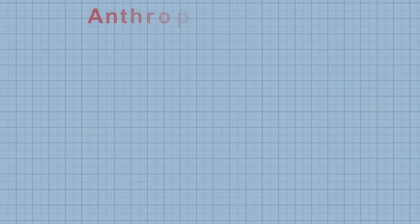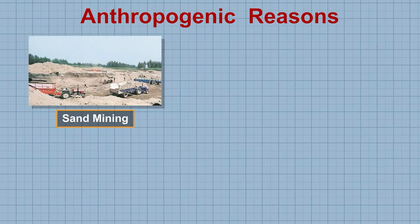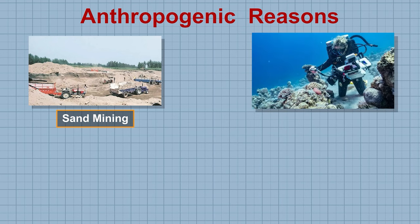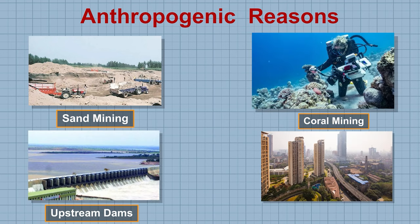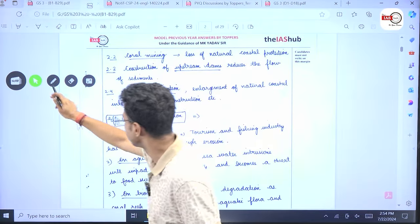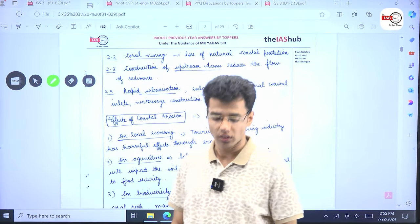Then, coming to the anthropogenic reasons. Sand mining is one of the biggest reasons of coastal erosion. Coral mining. Construction of upstream dams that reduces the flow of sediments. Rapid urbanization. Enlargement of natural coastal inlets. Waterway construction etc. Are some of the other reasons for coastal erosion.